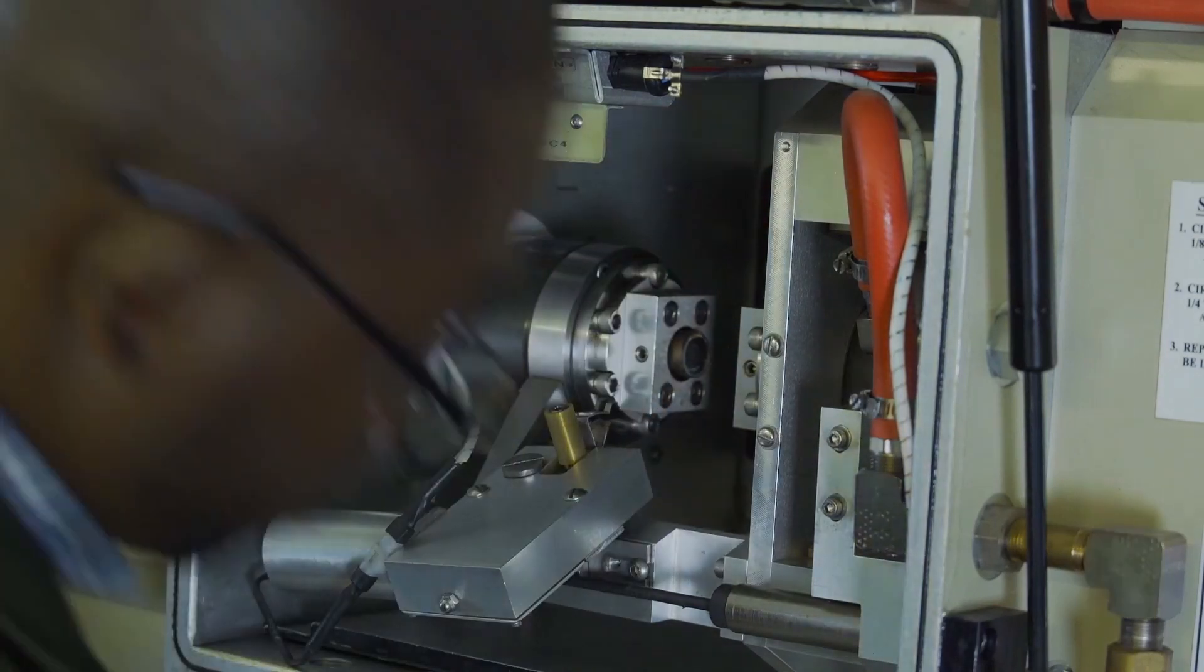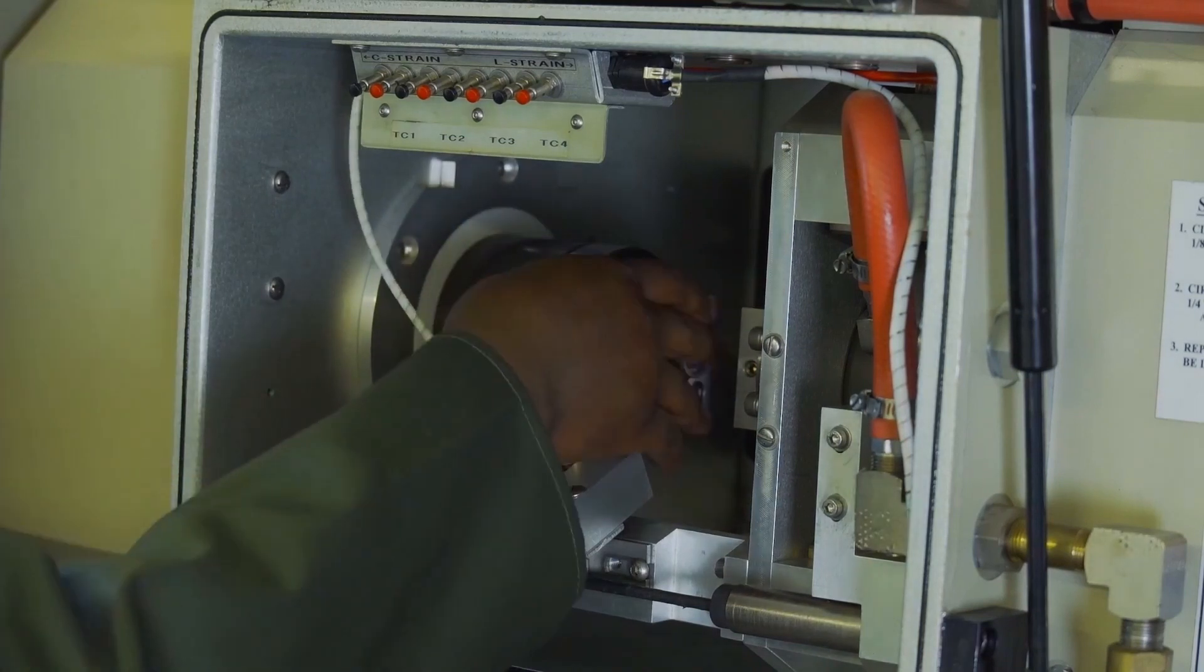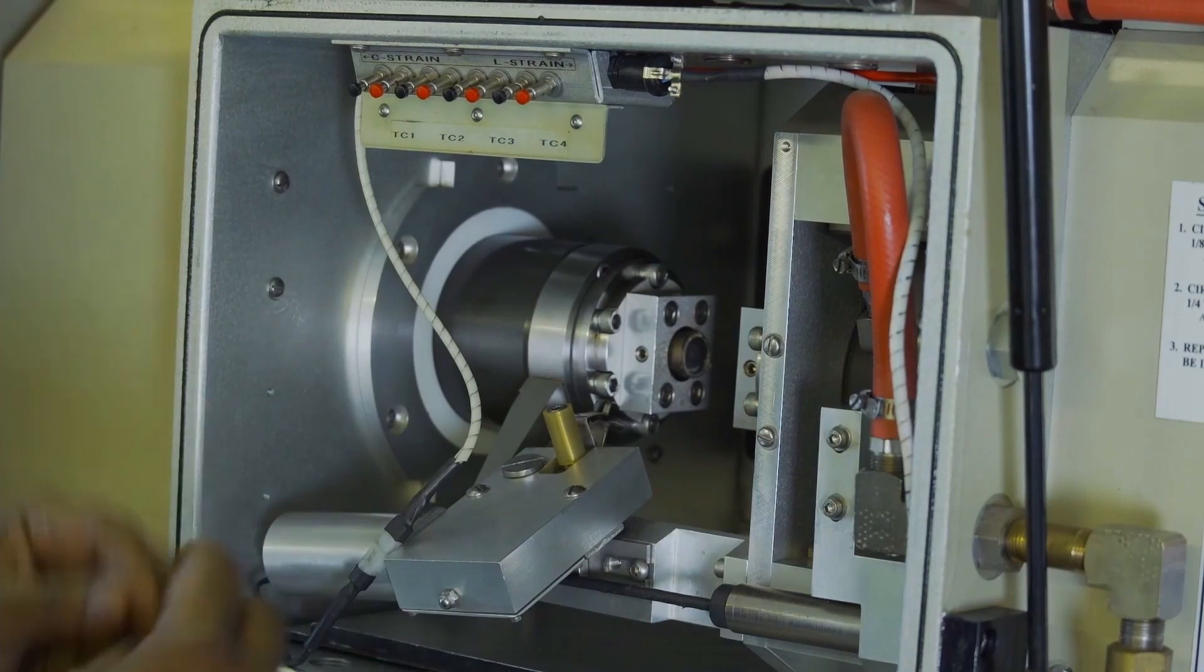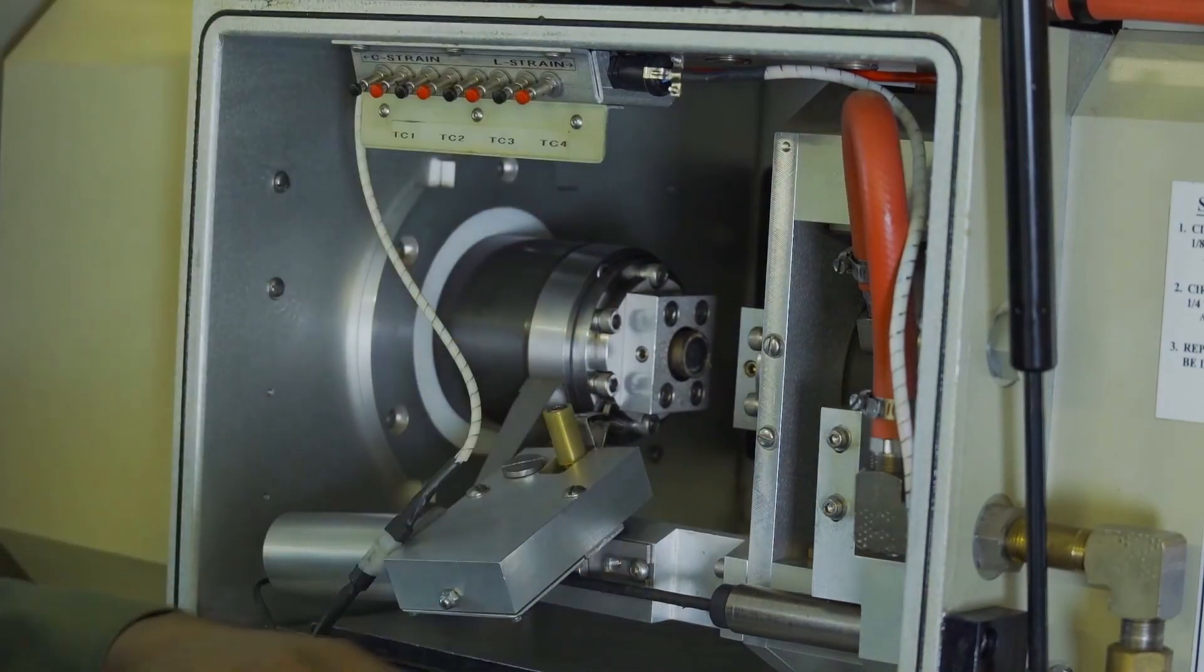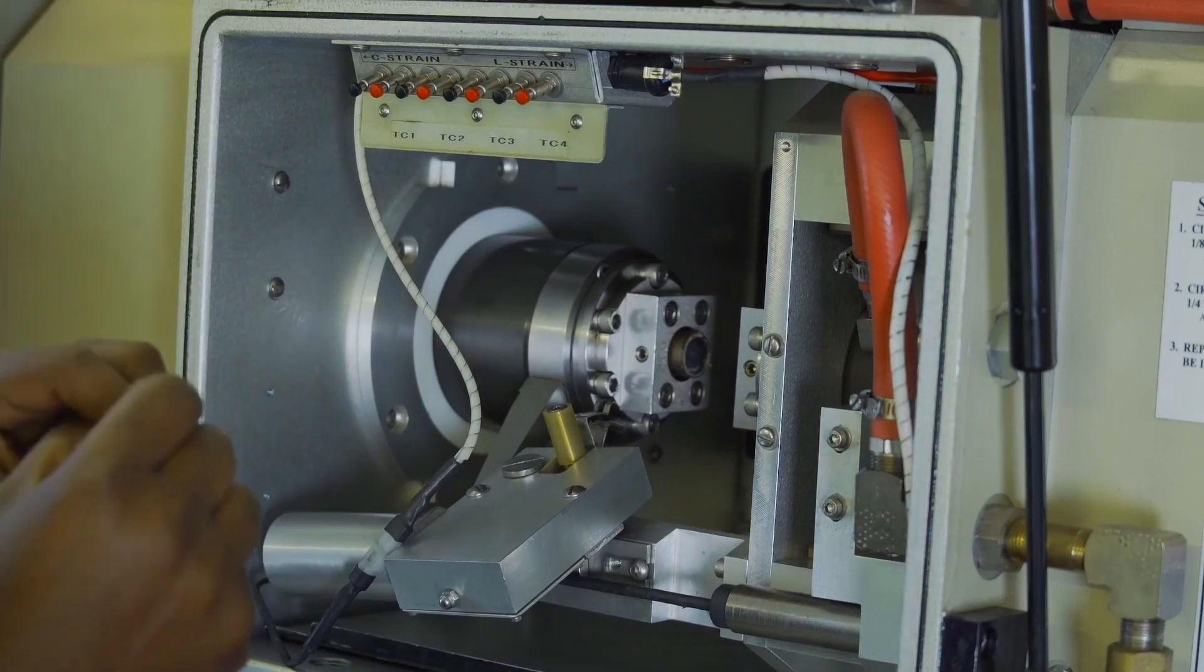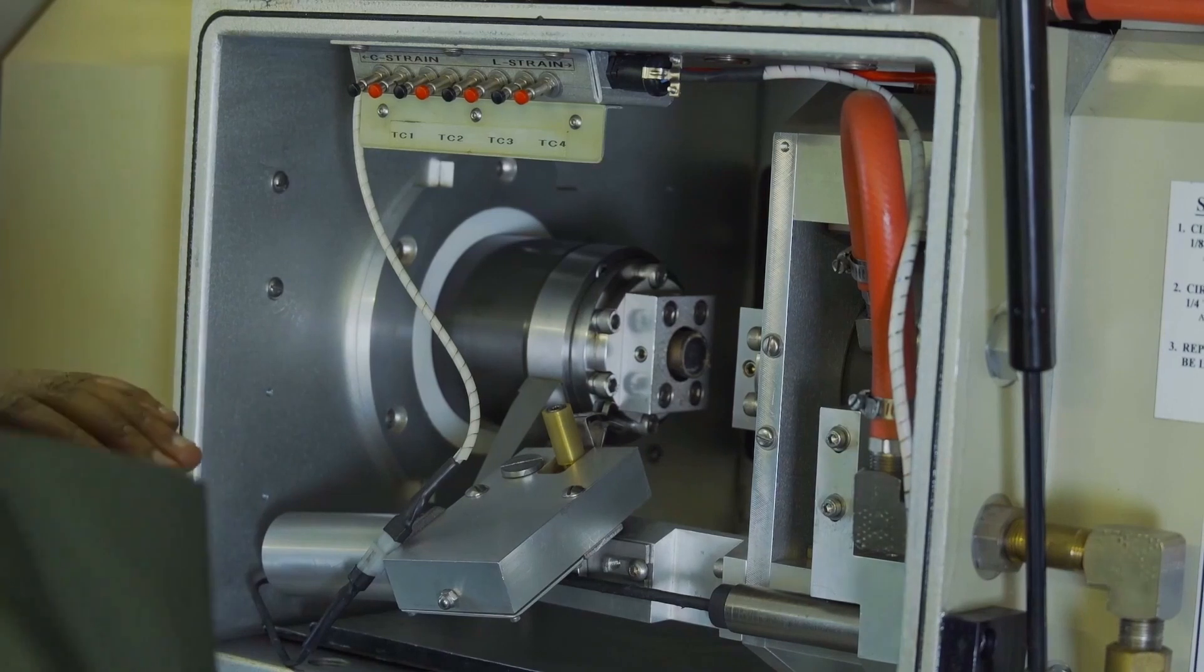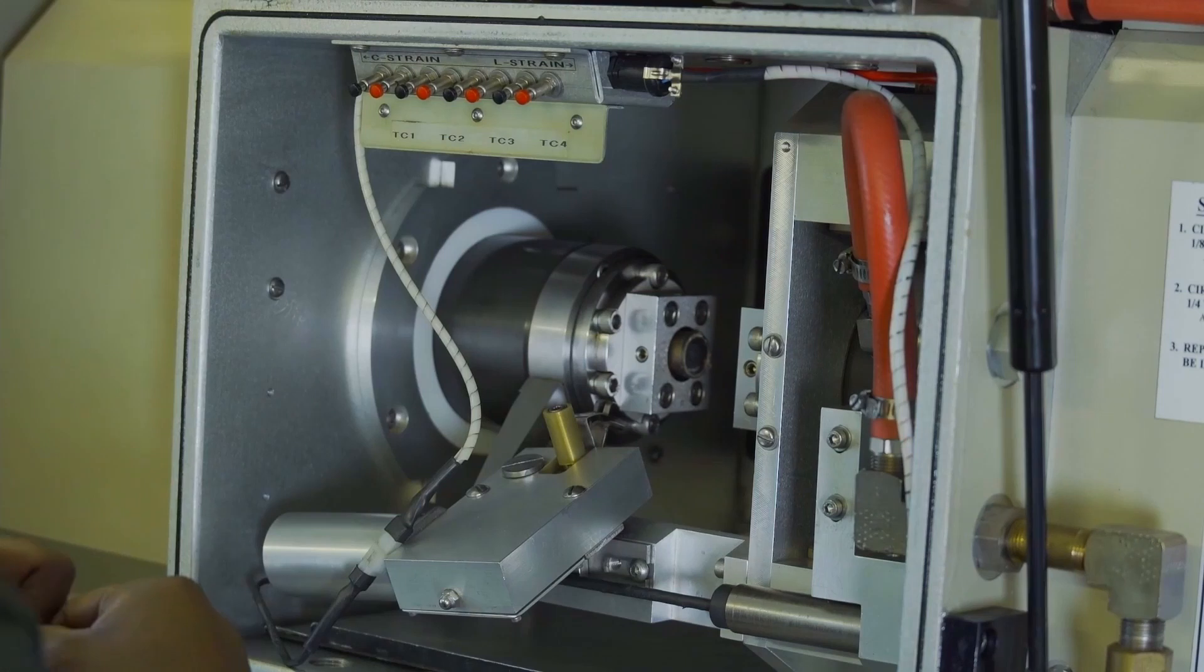The next thing I'll do is apply a lubricant on the surface of the anvils. Why do you need to apply a lubricant? Because you want to minimize the effect of friction on your results. Once the anvils grip the sample, they exert some frictional force on it, so you need lubrication so that wouldn't affect your flow stress.